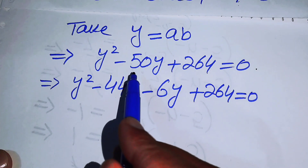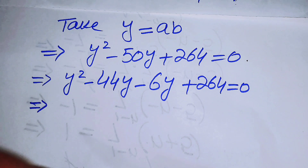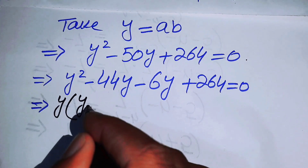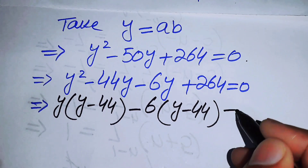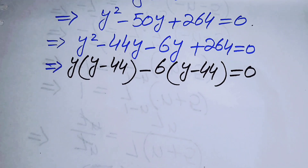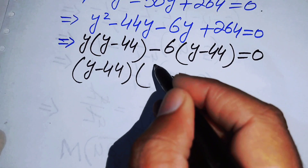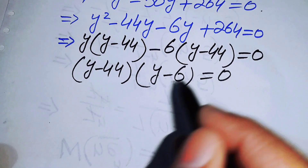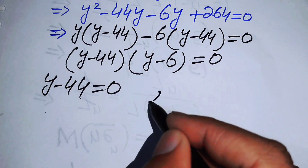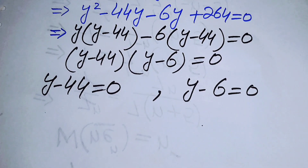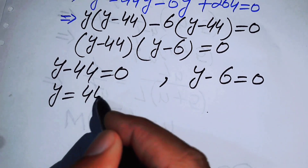Factoring the quadratic: y² minus 44y minus 6y plus 264 equals 0, because 44 times 6 equals 264 and 44 plus 6 equals 50. Taking common factors gives y(y minus 44) minus 6(y minus 44) equals 0, so (y minus 44)(y minus 6) equals 0.